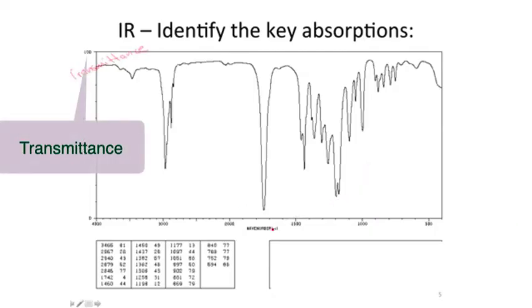100% transmittance would mean that the frequency in question is not absorbed at all by the molecule, that there's no bending or stretching in the molecule that matches that frequency. It's like a type of baseline. 0% transmittance corresponds to 100% absorbance of a given frequency.